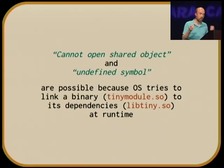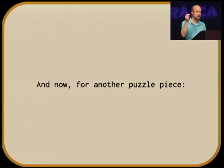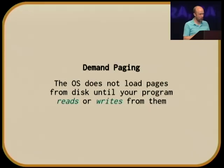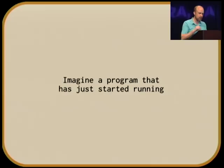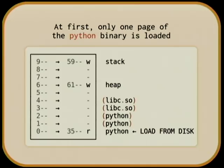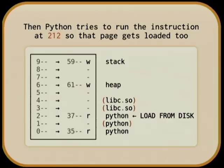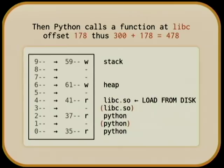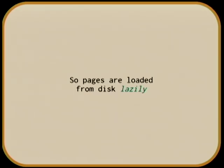Now for demand paging. The OS doesn't actually load pages from disk, even ones you've asked for, until you try to read or write from them. Imagine a program that's just started running where the Python binary takes up three pages and libc two. At first it won't actually load those in — it will only load in the first page that needs to start running. As one function calls another, it loads only the pages that get touched. Pages are loaded from disk lazily.